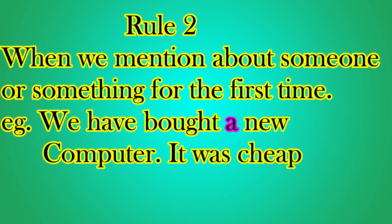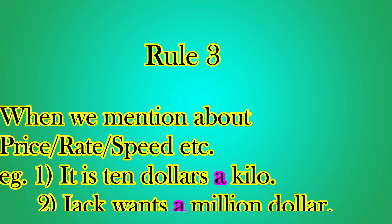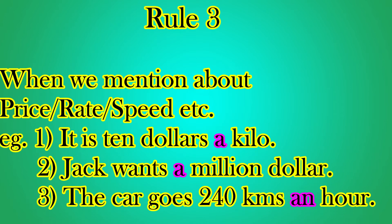The third rule: when we talk about price, weight, speed, etc., we use the article. For example: 'It is ten dollars a kilo.' Another example: 'Jack wants a million dollars.' And another: 'The car goes at 40 kilometers an hour.' These show how A and AN are used in expressions of rate or measurement.